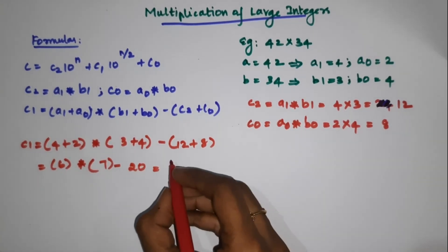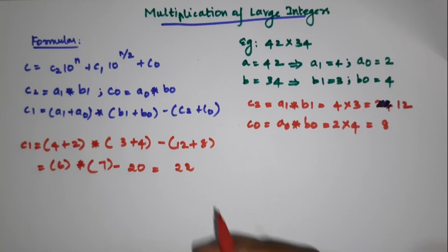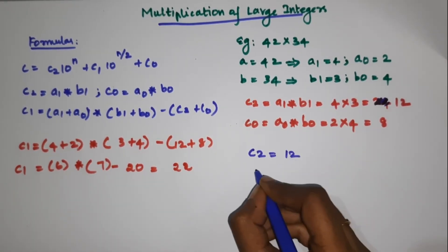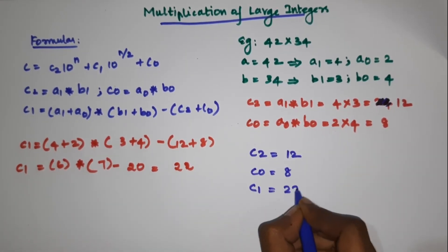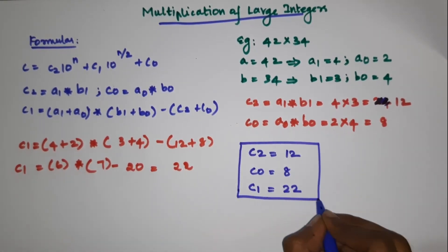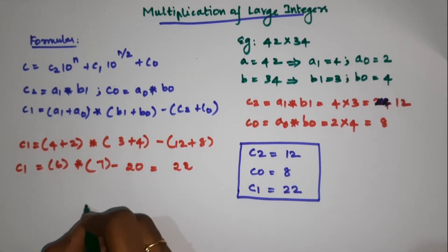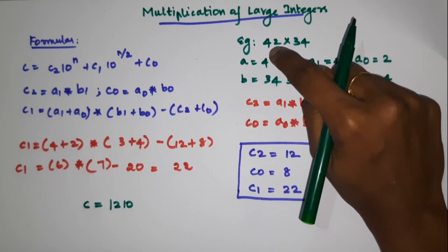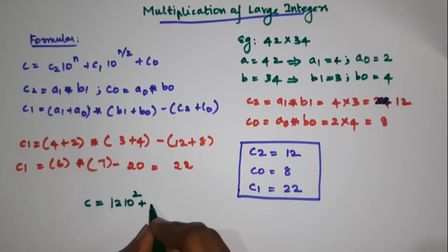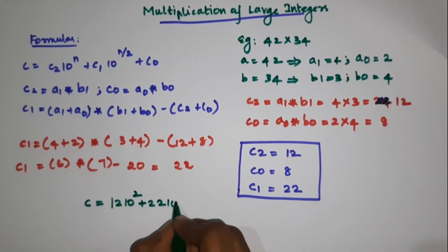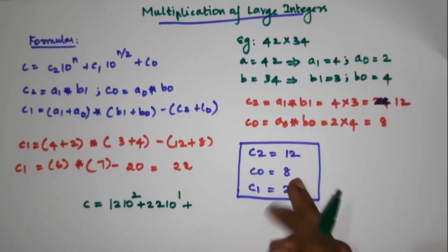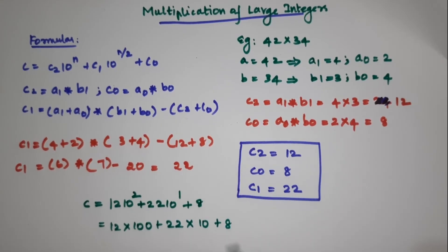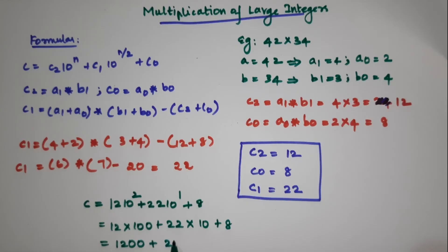So C2 value is 12, C0 value is 8, C1 value is 22. Now we plug these into the main formula: C is equal to C2 times 10 power n plus C1 times 10 power n by 2 plus C0, which is 12 times 10 power 2, plus 22 times 10 power 1, plus 8. That gives 1200 plus 220 plus 8.